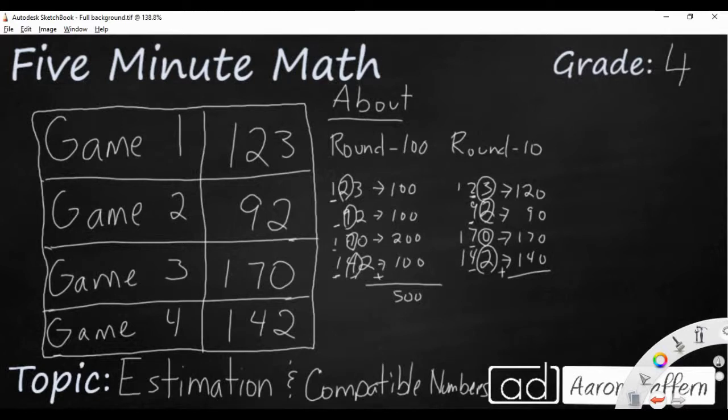So now we've got a little bit of addition we need to do. That's going to be 11 and 11, so that's 22. So that's 520. We're only 20 off when we use rounding to 10 as opposed to rounding to 100.